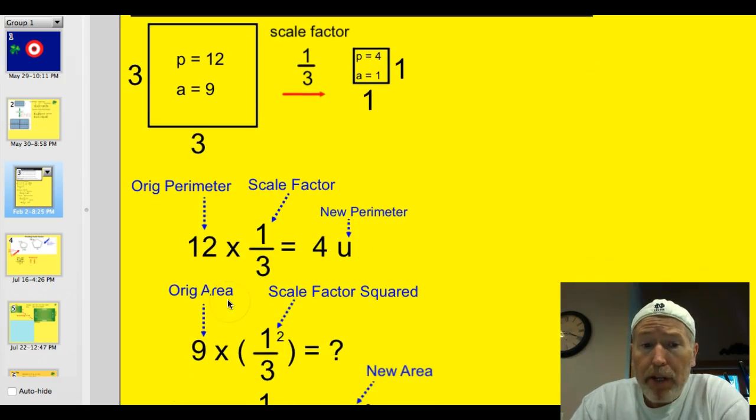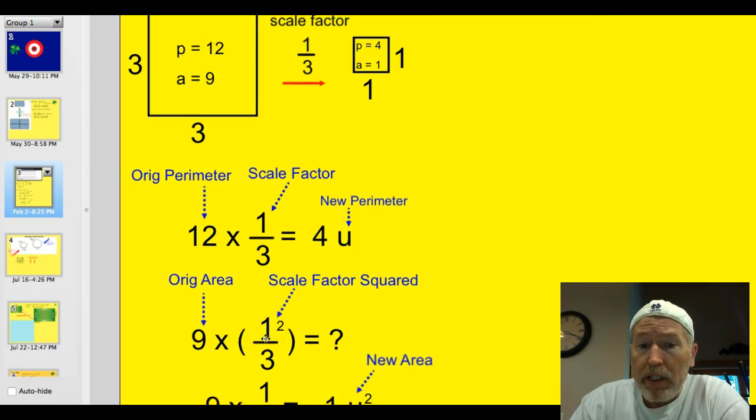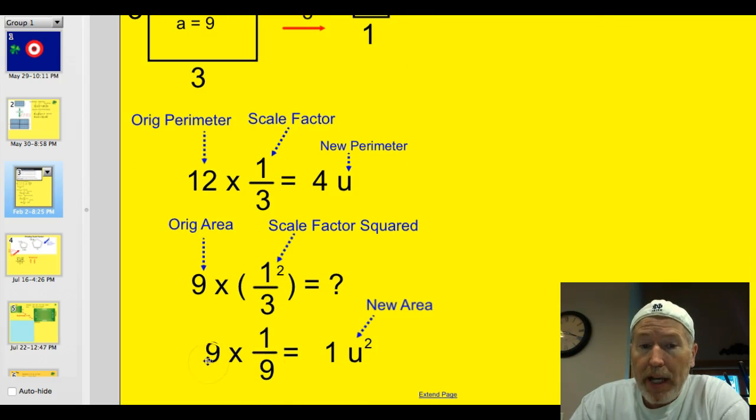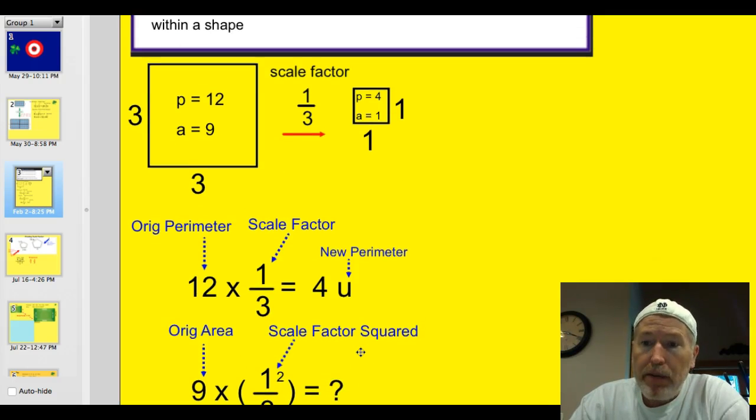Do the same thing with the area. We can take that original area times the scale factor squared. So we have one-third squared. Let's simplify that to one-ninth. So now you've got the original area of 9 times that 1-ninth. Well, 9 times 1 is 9. Divided by 9 is 1 unit squared. So we're able to determine it mathematically as well.